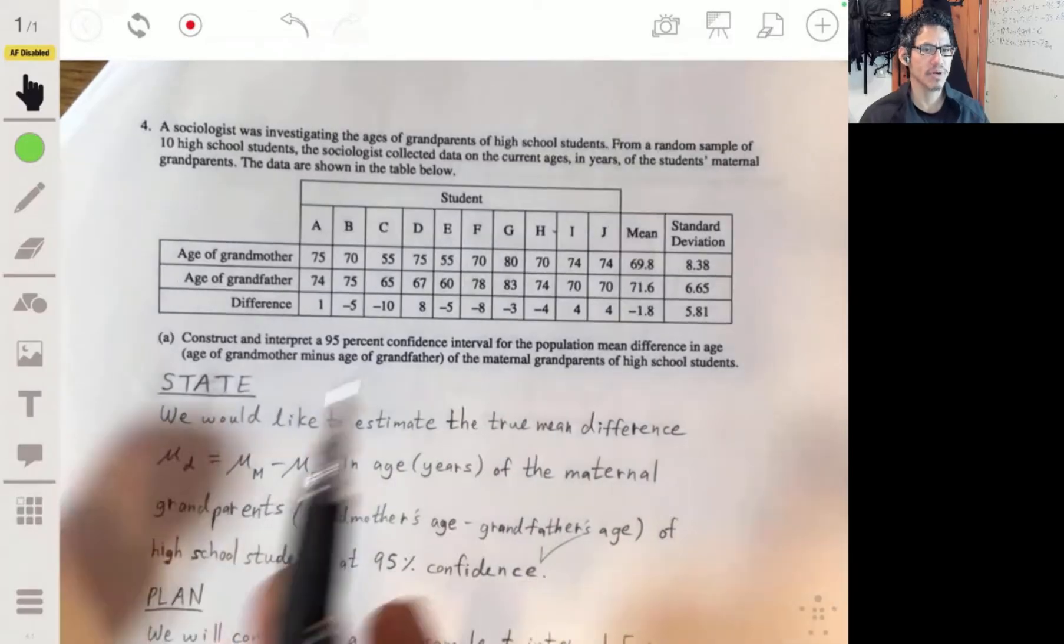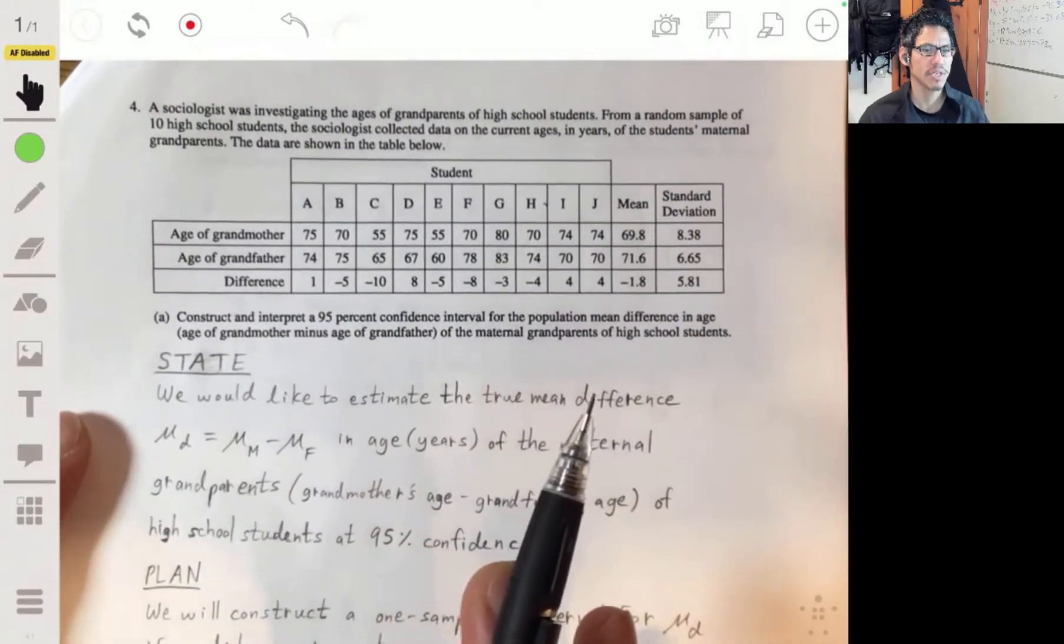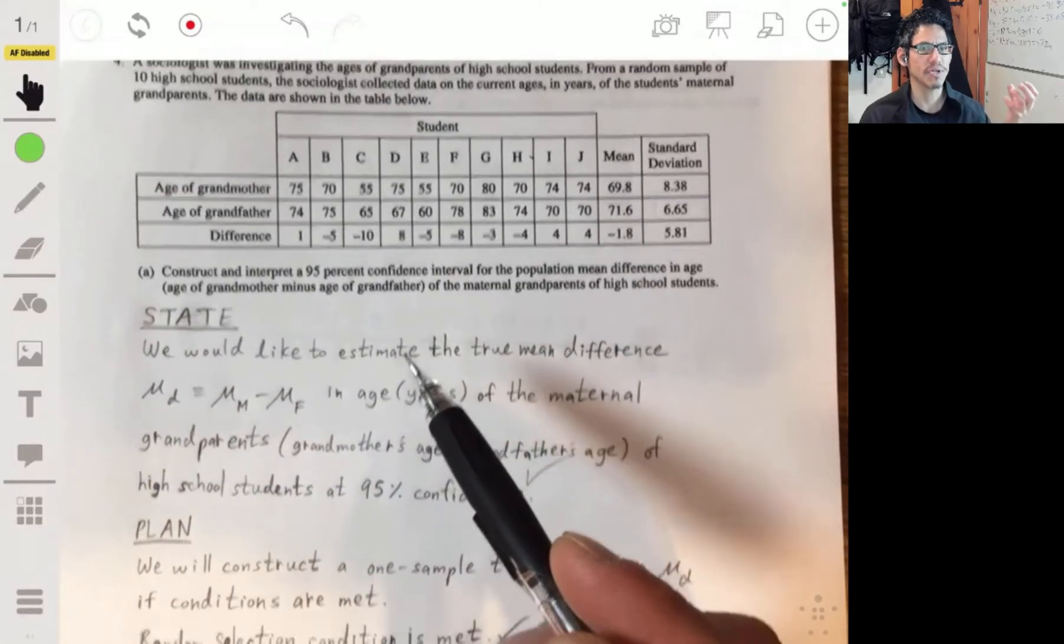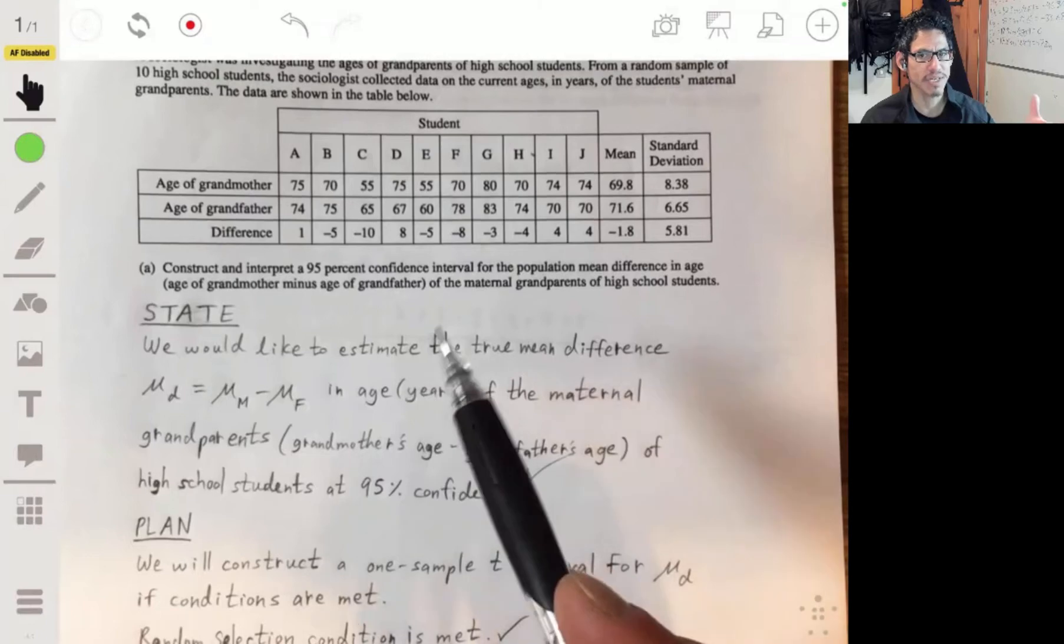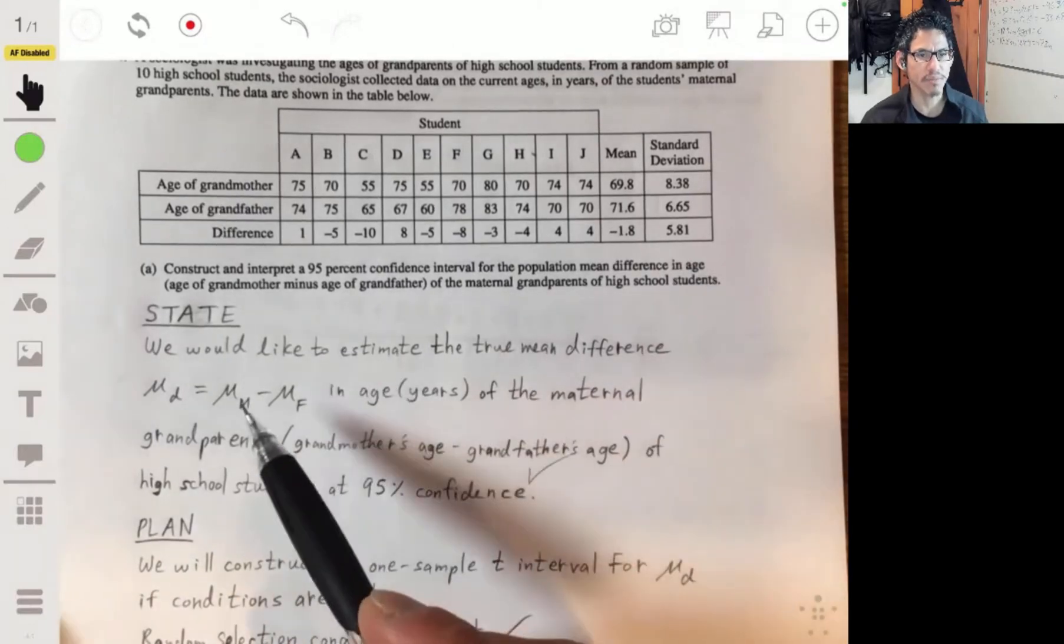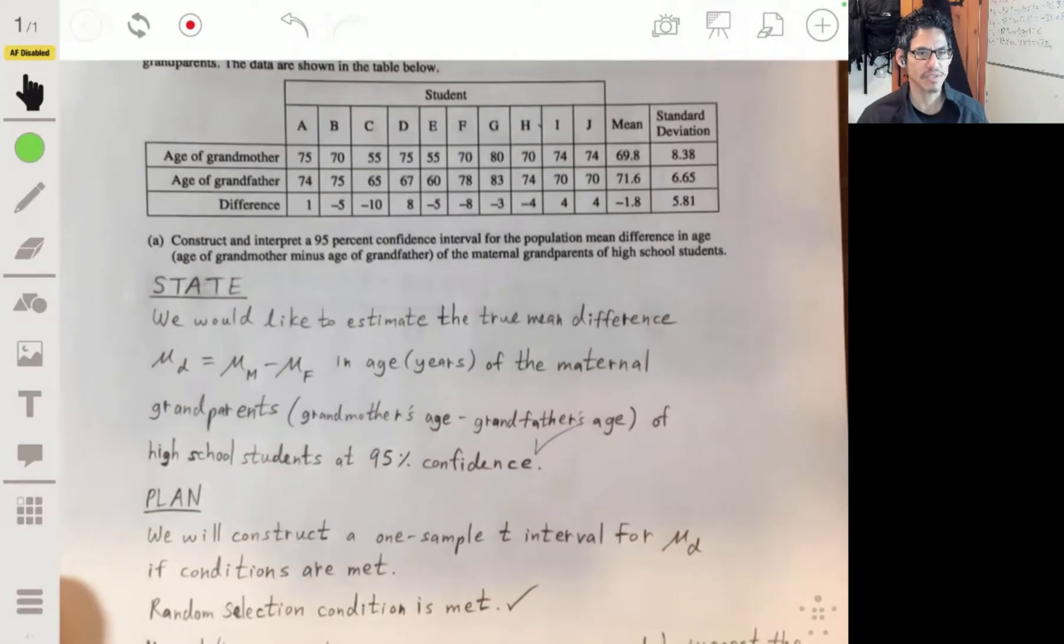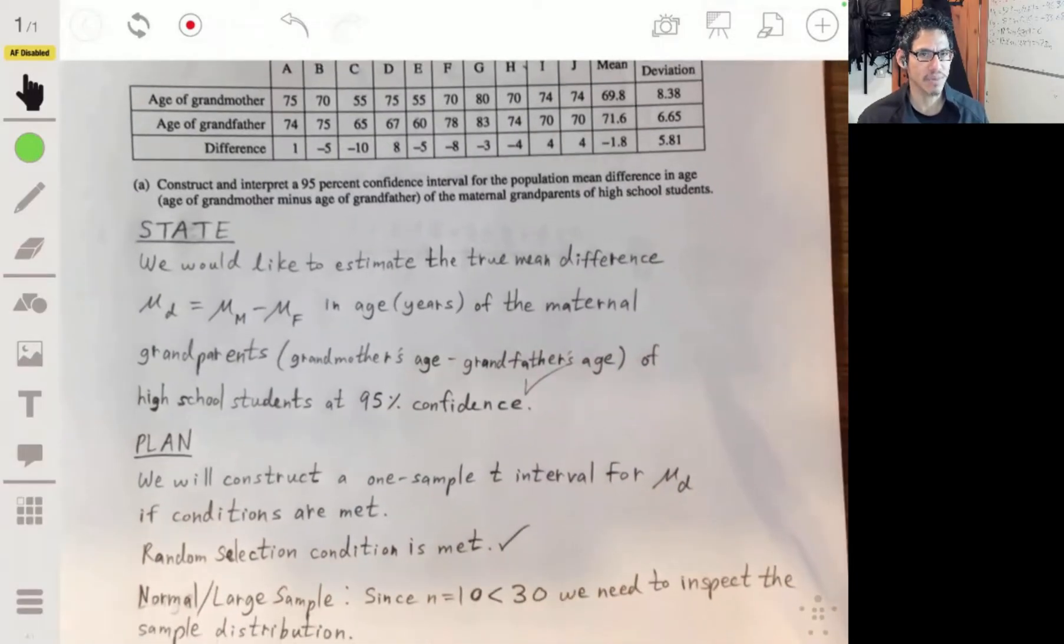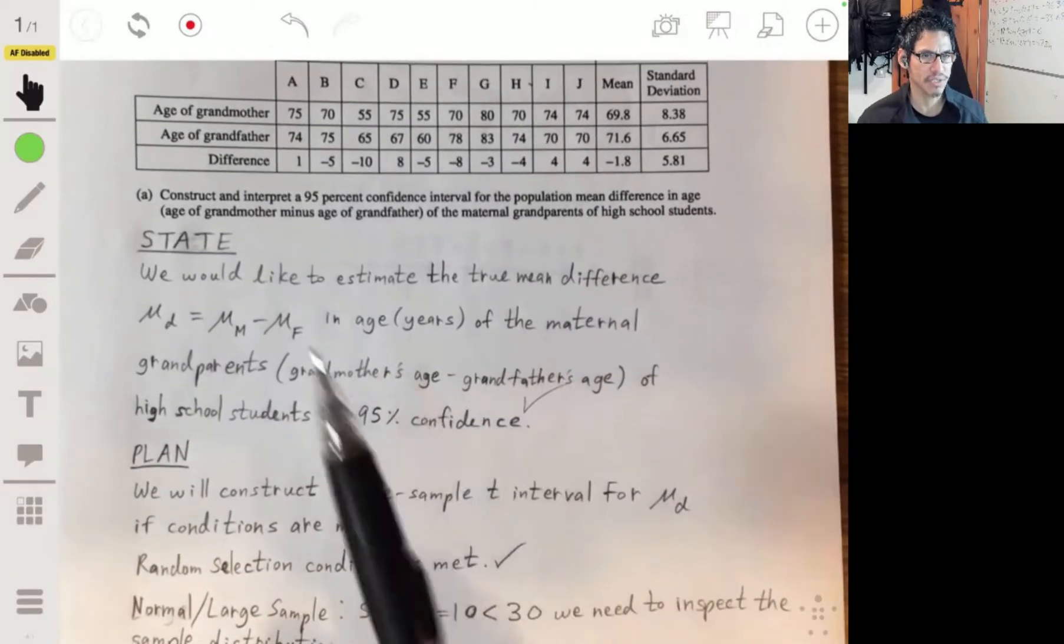The main thing you want to make sure when you do this is to make sure you're saying you're always trying to estimate the true population mean. Don't make the mistake of putting sample mean in here because that's wrong. We know the sample mean. We're not going to try to estimate it. We know we can actually get it. So make sure you don't make that mistake.